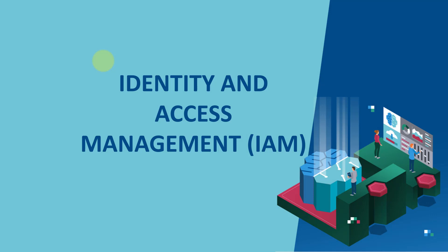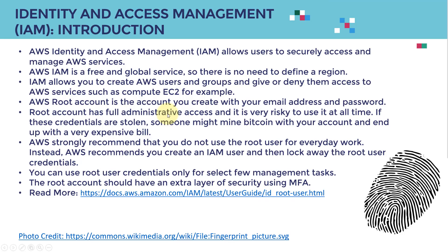The next service I wanted to cover is Identity and Access Management, or IAM for short. IAM allows users to securely access and manage AWS services. IAM is a free and global service — there is no need to define any region for it. IAM allows you to create AWS users and groups and give or deny them access to certain services such as EC2. When training AI and ML models in SageMaker, you need to specify access — who has access to your notebook instance, who is able to access your S3 buckets, and so on.